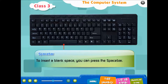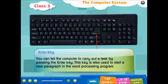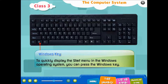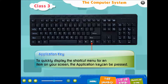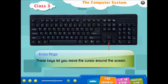To insert a blank space, you can press the Space Bar. You can tell the computer to carry out a task by pressing the Enter key; this key is also used to start a new paragraph in a word processing program. To quickly display the Start menu in Windows, press the Windows key. The Application key quickly displays the shortcut menu for an item on screen. Arrow keys let you move the cursor around the screen.